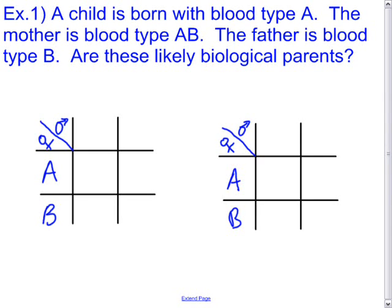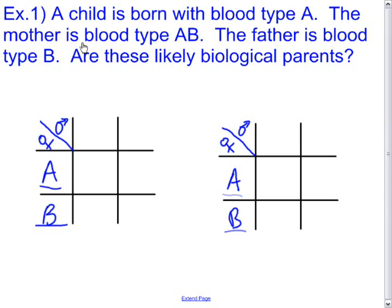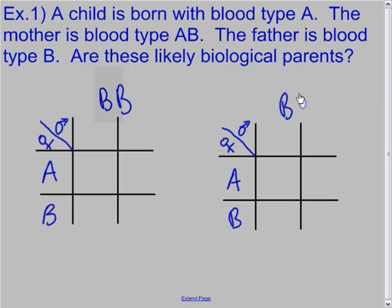The mother is type AB, so she can only have A and B alleles — that's easy to set up. However, the father is type B, which leads to two possibilities: he is either homozygous for B, or heterozygous for B.